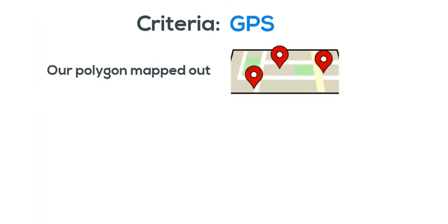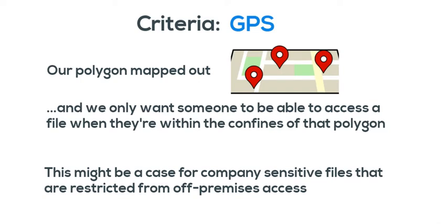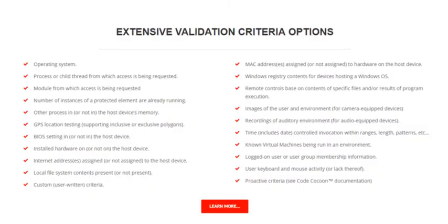Let's say we have a polygon mapped out — maybe it's our business building location. We can use the GPS criteria to define something such as requiring somebody to only be able to access a file when they're within the confines of that location. This might be a case for company-sensitive files that are restricted from off-premises access. Remember, we're using super simplified examples, and the actual criteria can be multiples mixed and matched across criteria groups to come up with exactly the situation needed.